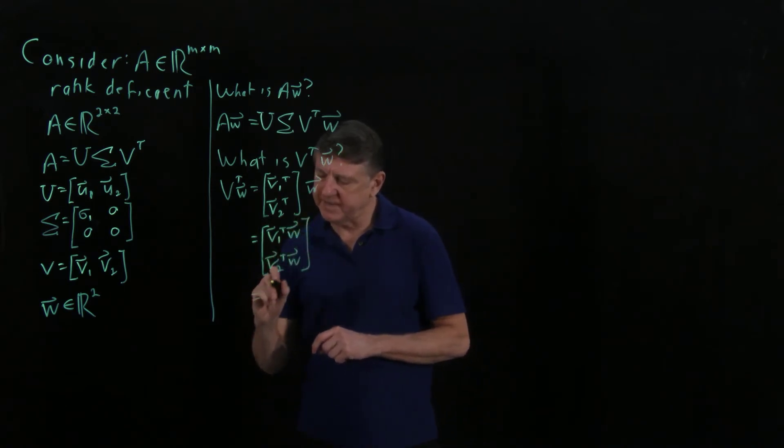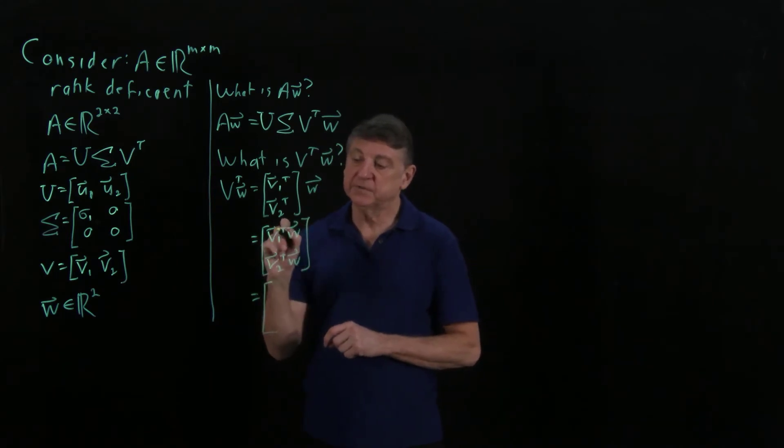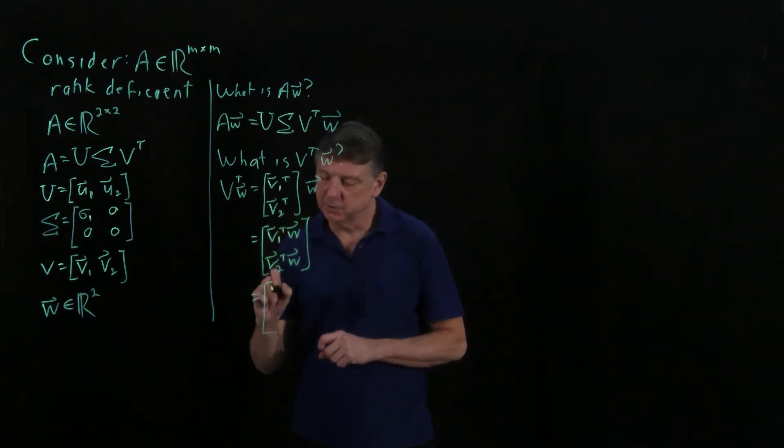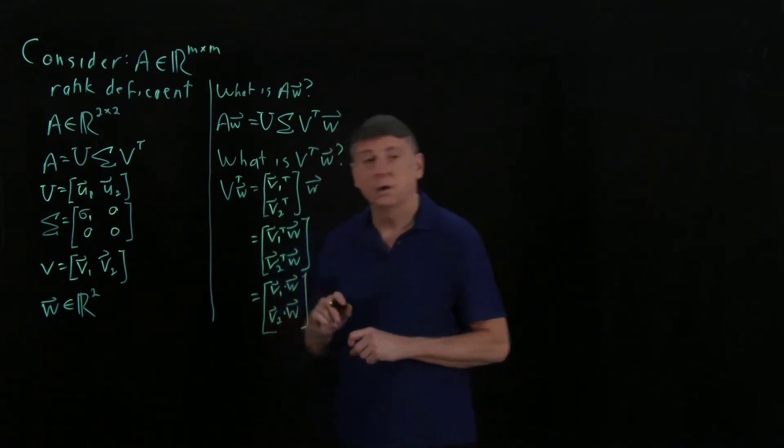Well, another way to write that is V1 transpose, any matrix transpose times any vector times transpose times a vector is the dot product of the vectors. So I could write that as V1 dot W, and V2 dot W. Good.